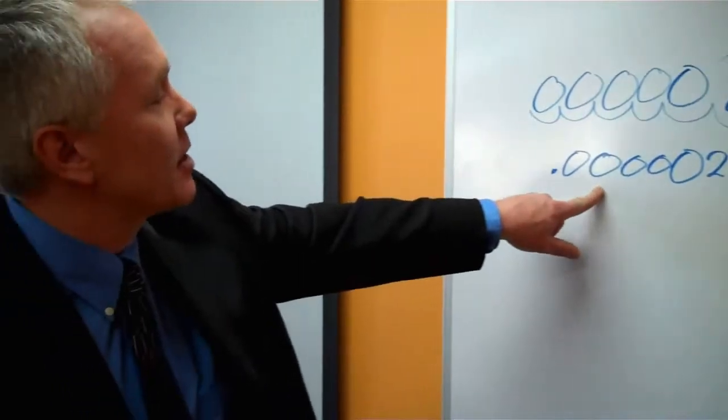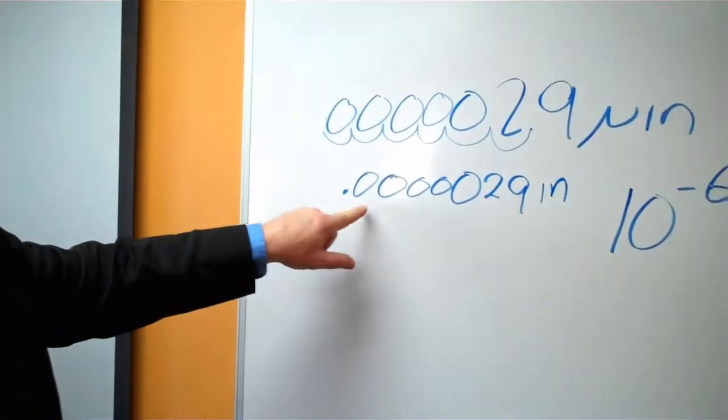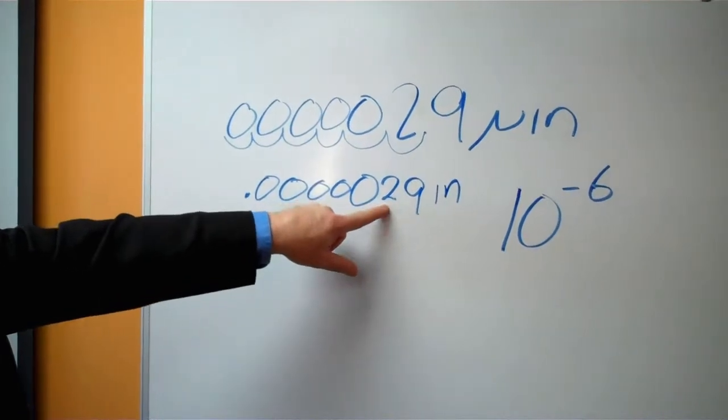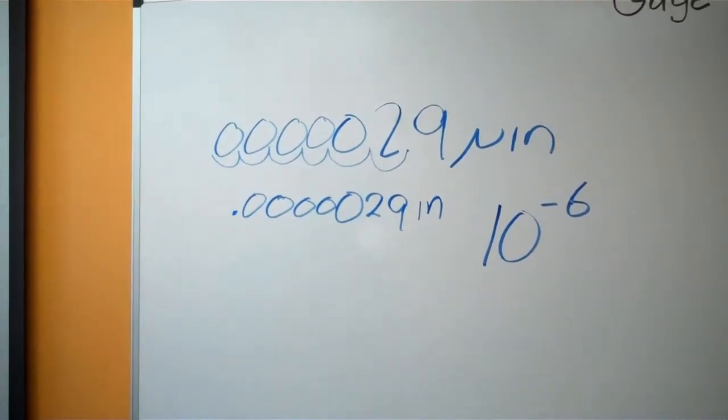So when you read it in this case, it's basically 2.9 millionths or .00002 millionths, and almost 3 millionths if you wanted to round upwards.